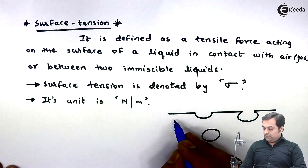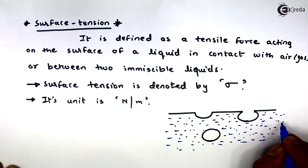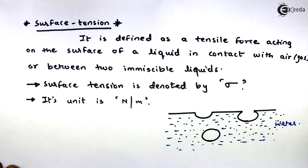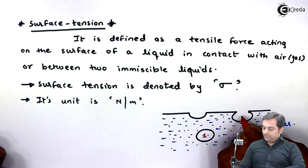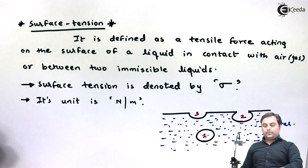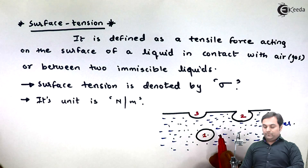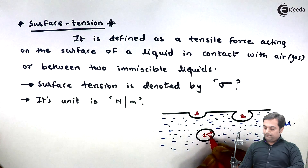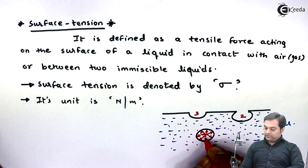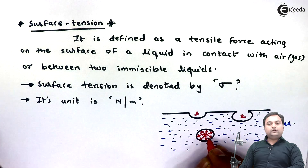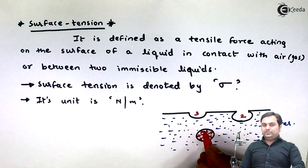To explain surface tension using a diagram, consider a liquid — here I am taking water — with three different molecules. This is molecule number one, molecule two, and molecule three. Molecule one, which is fully inside the liquid, is pulled in all directions by the surrounding molecules. The resultant of all these forces is zero, so the molecule remains stationary at its position.